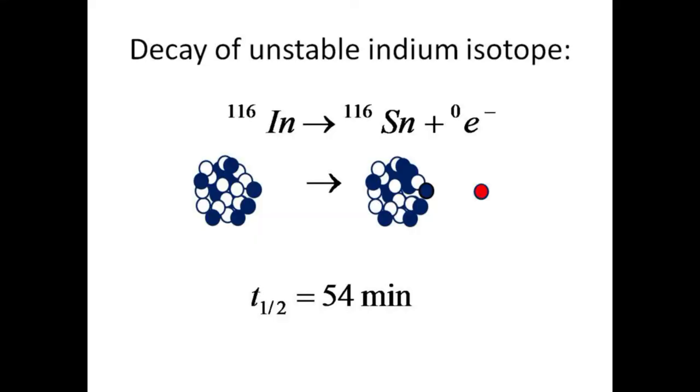The unstable isotope of indium will decay into tin with the emission of a beta particle. The half-life for this decay process is about 54 minutes. Your goal is to monitor counts with the Geiger counter to measure this half-life.